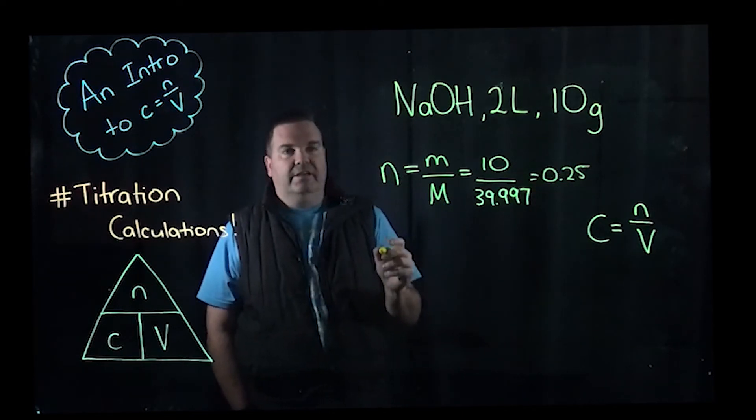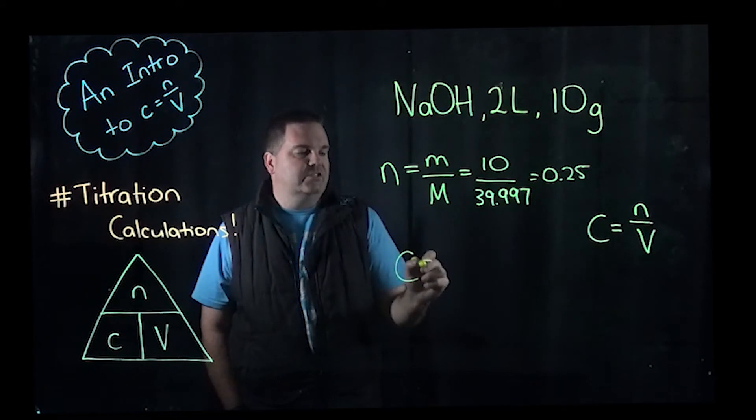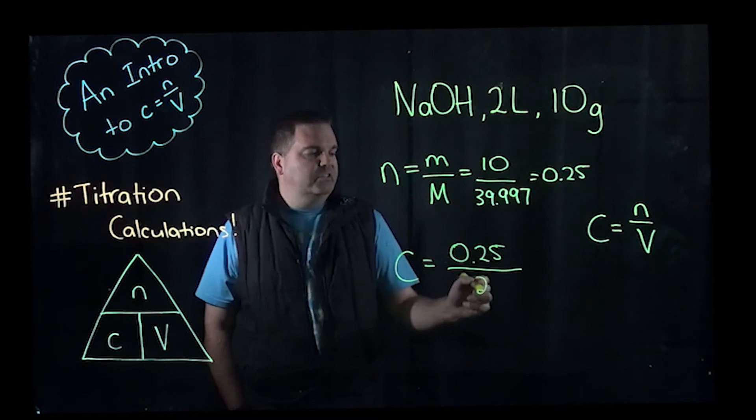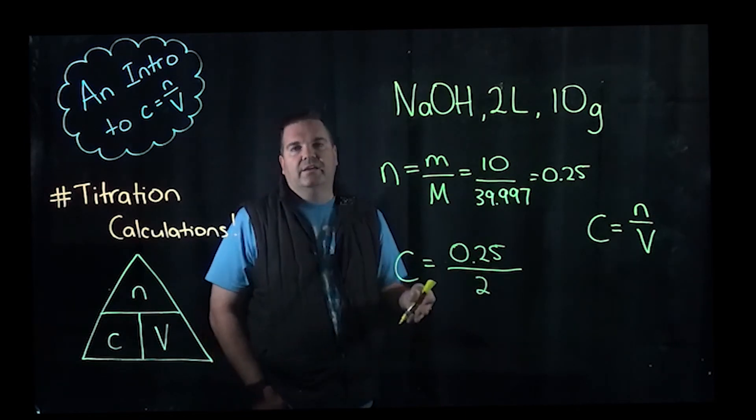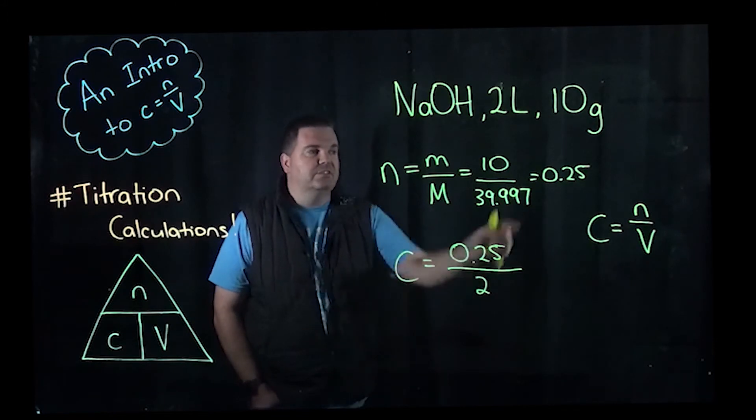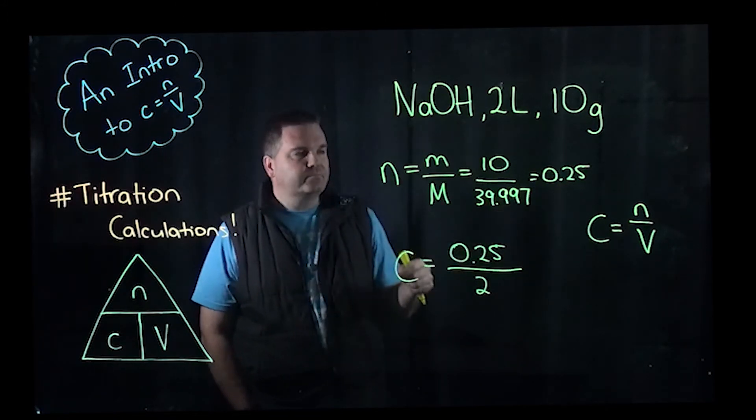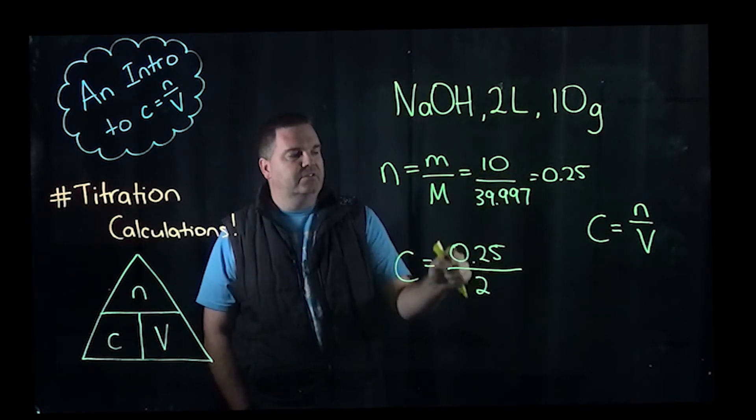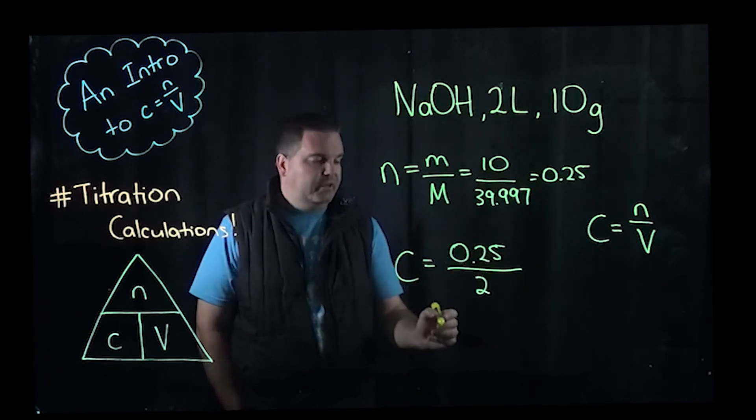So now we can do our calculation for concentration. Concentration equals number of moles, which is 0.25 over our volume, which is two. Now, if you're doing these calculations in a test or an exam, what I suggest is that you don't round off because this is not exactly 0.25. I'd just do 10 divided by 39.997 to get this first value, and then divide it by two.